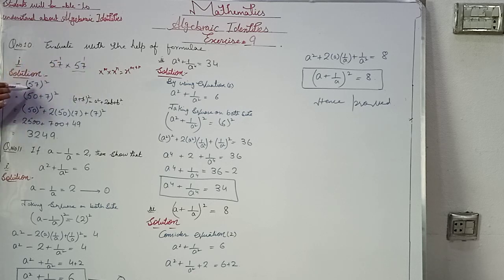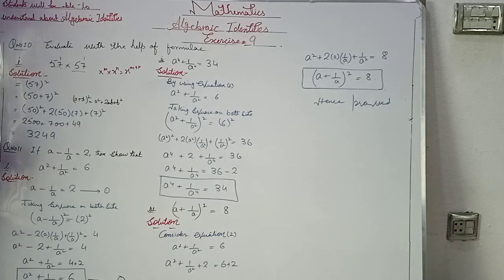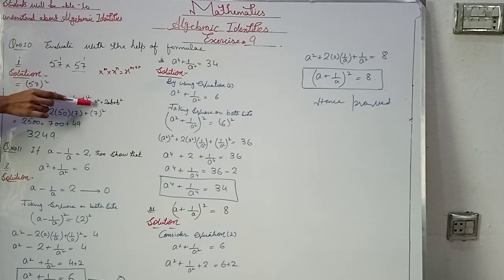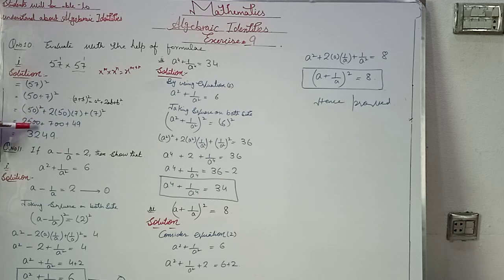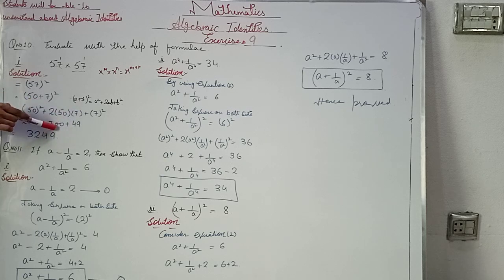So the result is 57 squared. We expand this as (50 + 7)², which gives 50 squared plus 2 into 50 into 7 plus 7 squared, that is 2500 plus 700 plus 49.